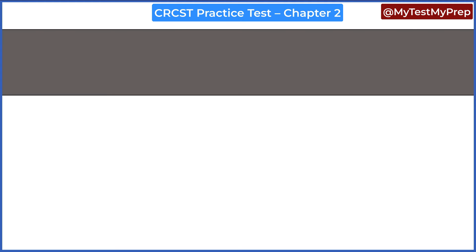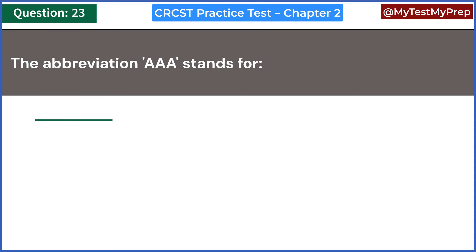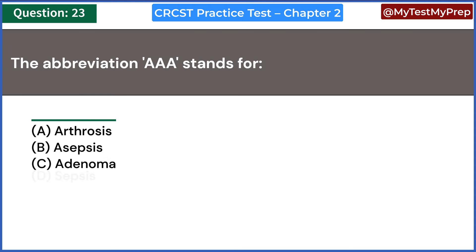What does the abbreviation AAA stand for? A. Anterior abdominal area. B. Abdominal aortic aneurysm. C. Aortic anterior aneurysm. D. Anterior aortic attachment. Answer: B. Abdominal aortic aneurysm.